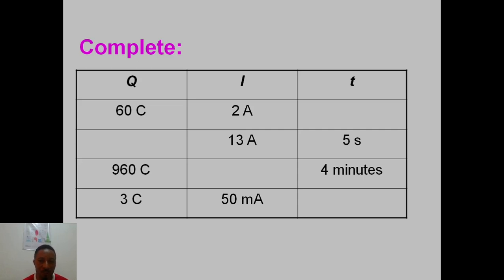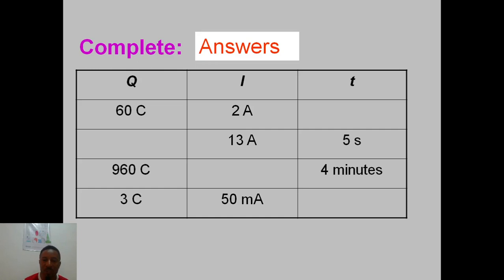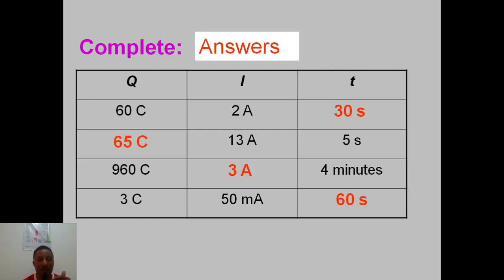Try out the remaining practice problems on your own and compare your answers. For the first one, to find t: time equals charge over current, so we expect the answer to be 30 seconds. Try the rest and see if your answers tally. Don't forget to subscribe to the channel — click the subscribe button. If you have any questions, feel free to ask and I will get back to you. Thank you.